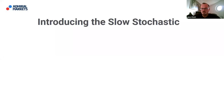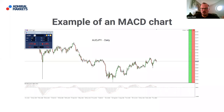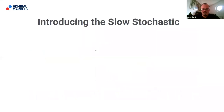That's the MACD covered. Importantly, you don't need to download it from an external source — it's a standard indicator within your trading station. In MetaTrader 4 or MetaTrader 5, it's a standard indicator. Just click the indicators menu and look under 'Trend' or 'Oscillator' — somewhere there you'll definitely find it.